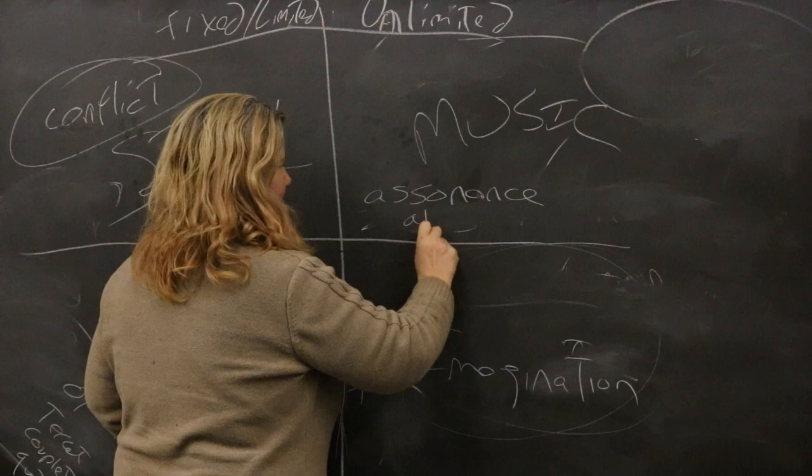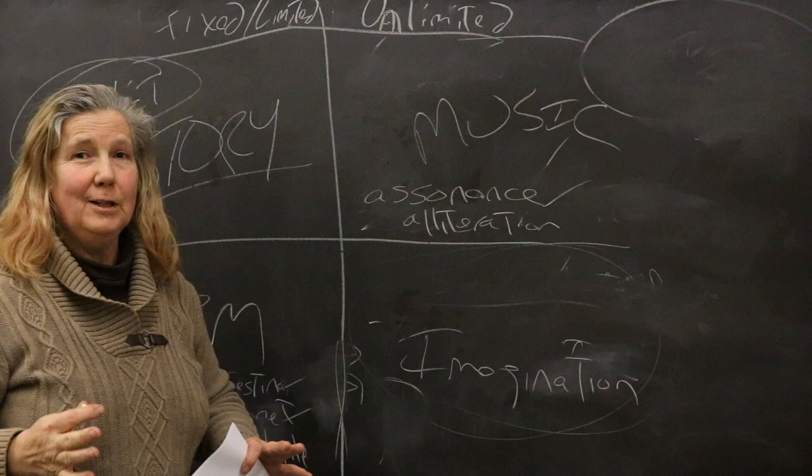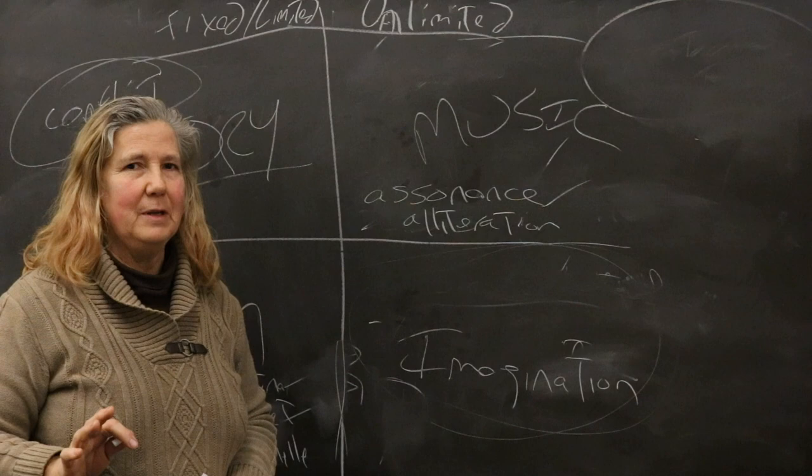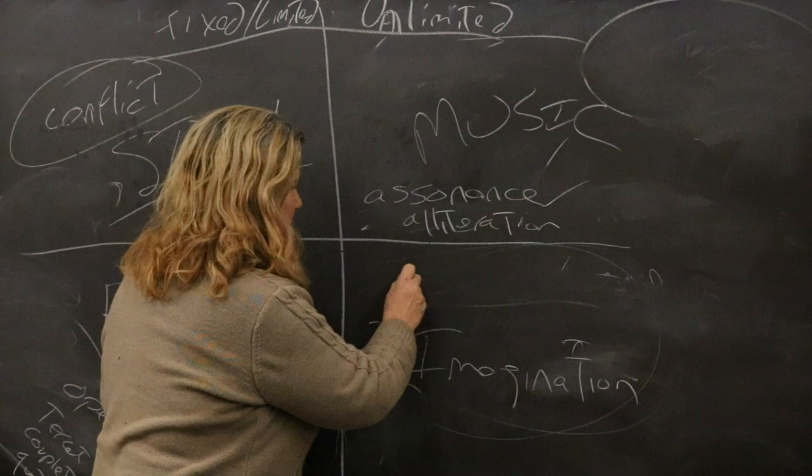So, music. Assonance. Old school chalkboard. Alliteration. The repetition of vowels and the repetition of consonants are what I just love to see in poems. I tell my students there's only 26 letters in the English language, so it's not that hard to repeat them. So you ought to be able to do it. I love to see that in poems. I think that's what really will make a poem pop off the page.